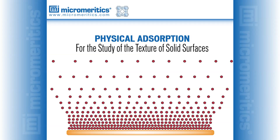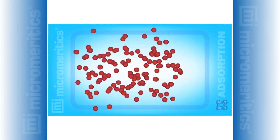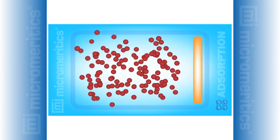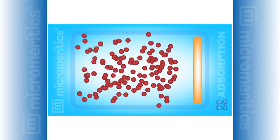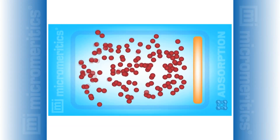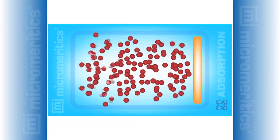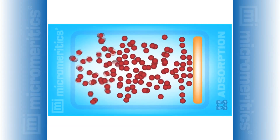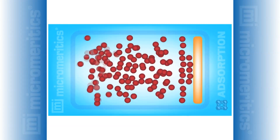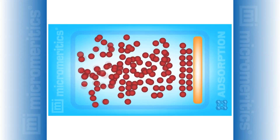Physical adsorption is a technique used to characterize the surface and pore features of solids — that is, the material's texture. The characteristics quantified by physical adsorption include surface area, total pore volume, and pore volume distribution by pore size. The physical adsorption analytical technique consists of exposing a carefully prepared sample to an inert gas. Sample preparation is often referred to as degassing, which is a process of cleaning a sample using either evacuation or an inert gas purge while heating to remove weakly adsorbed molecules.